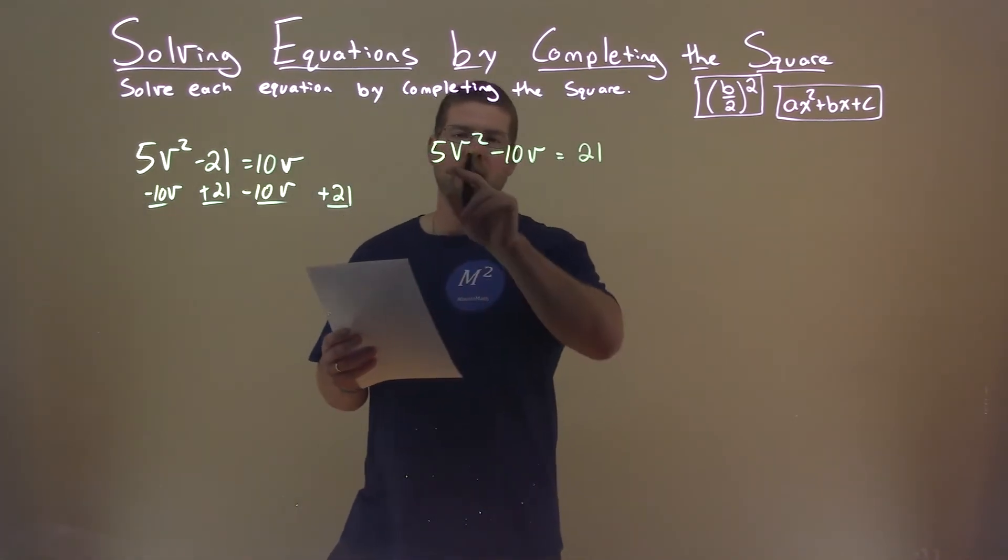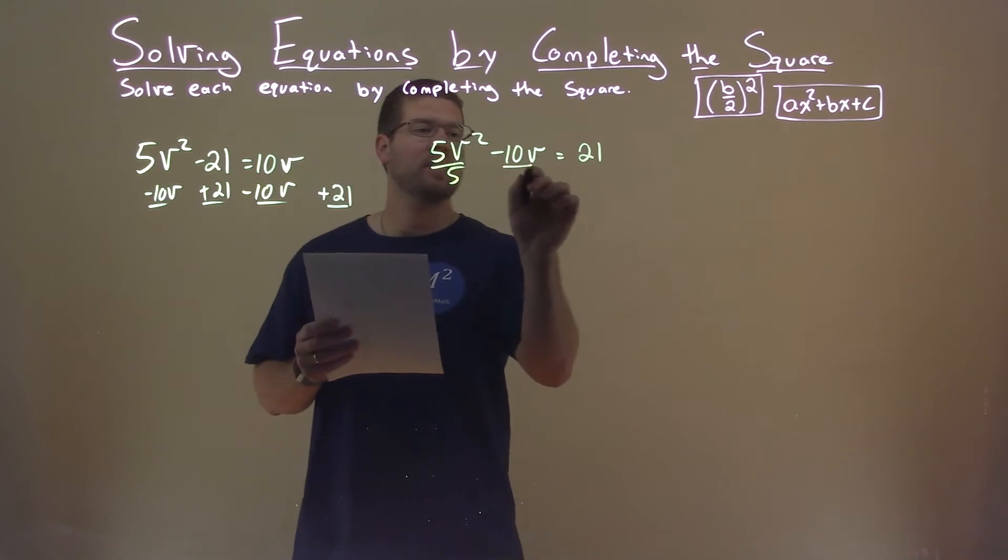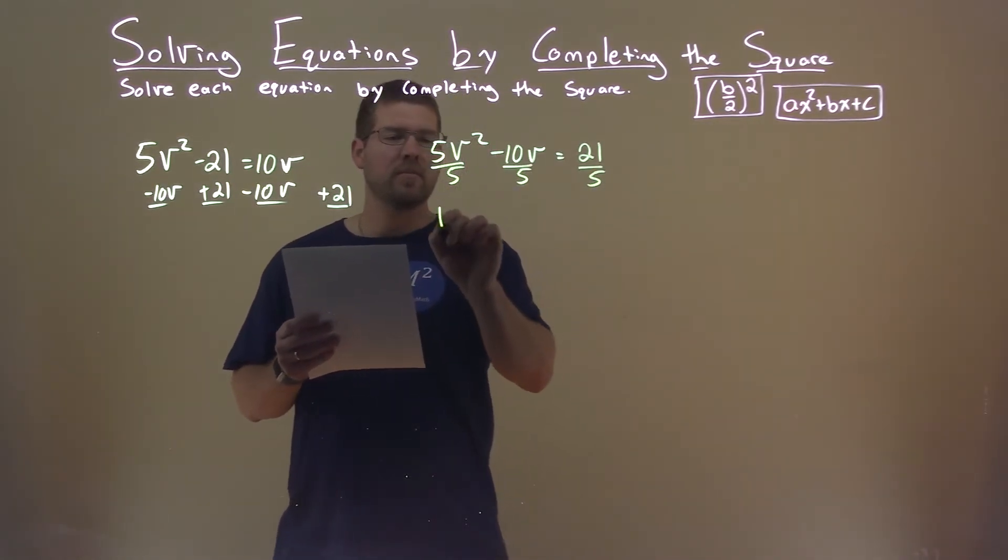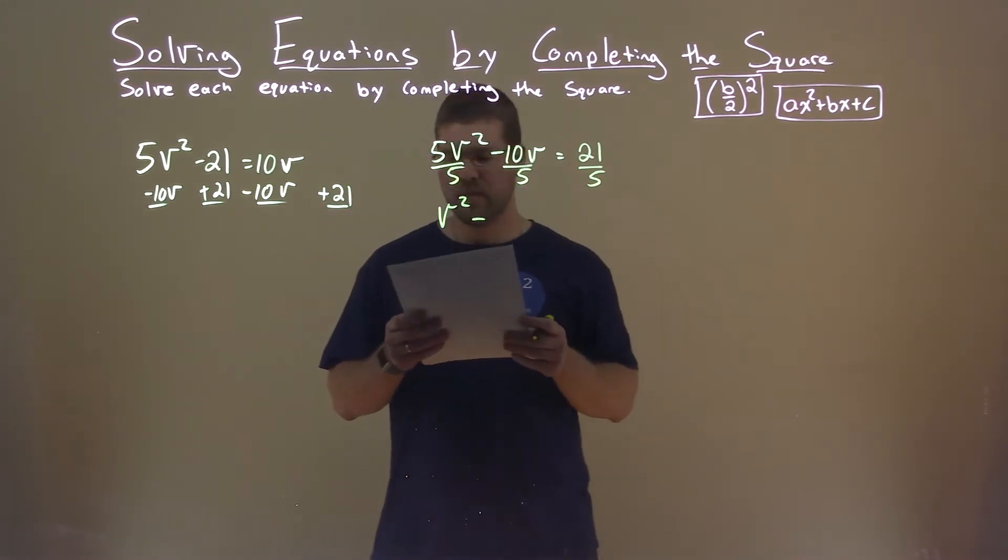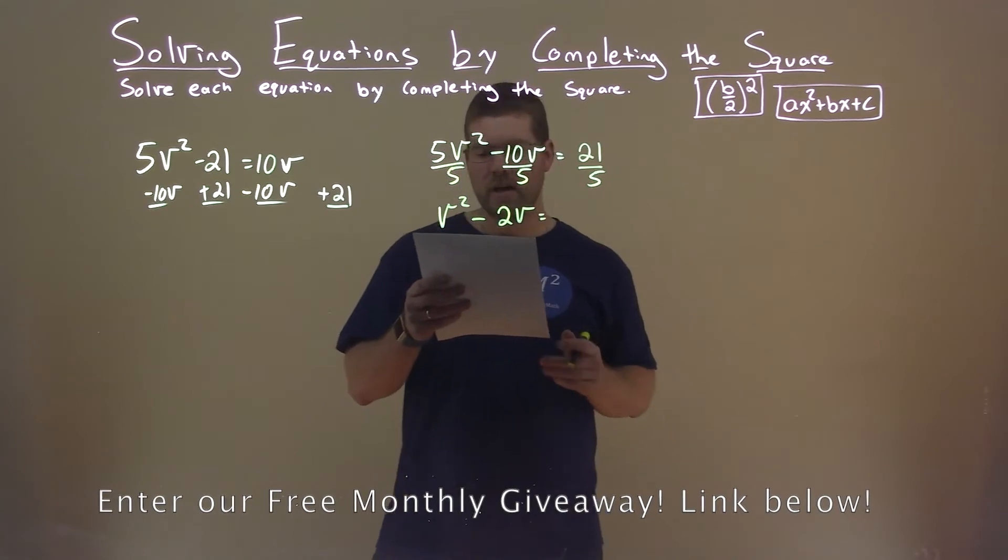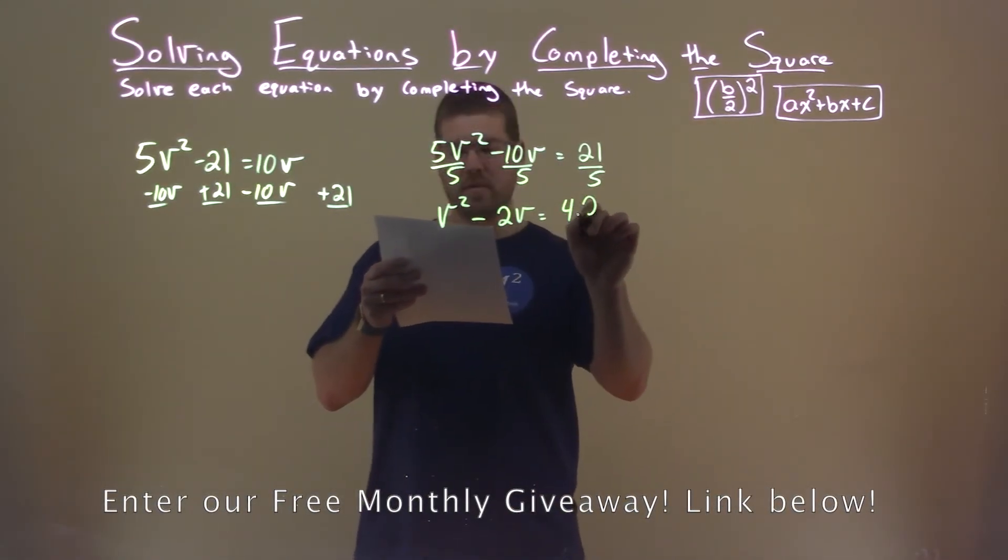Alright, I don't like having an a value that's more than 1, so I'm going to divide everything here by 5. That gives me v squared by itself here, minus 2v, and 21 divided by 5 is 4.2. It's a decimal.